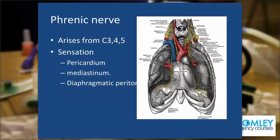The phrenic nerve arises from quite high in the neck — C3, 4 and 5 — and then descends down through the mediastinum, running on either side of the pericardium before reaching the diaphragm and providing motor supply to the diaphragm muscle. Of course the diaphragm is a tendon in the middle, and all the muscular fibers are peripheral and they're innervated by the phrenic nerve.